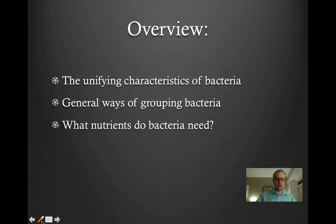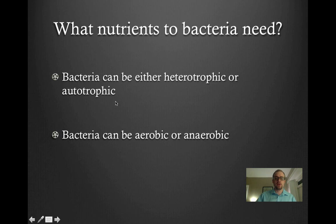So far we have covered the first two points in our overview. We've talked about the unifying characteristics of bacteria, and we've talked about general ways of grouping bacteria together. Finally, I want to talk about what nutrients bacteria need to survive, and what are some different ways that they can take up and process nutrients. We can talk about bacteria either being heterotrophic or autotrophic, and we can also classify bacteria as being aerobic or anaerobic. I'll go into those in more detail in the next few slides.